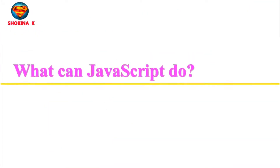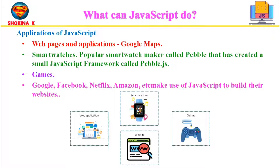JavaScript is mainly known for creating beautiful web pages and applications. An example is Google Maps — if you want to explore a specific map, all you have to do is click and drag with the mouse. Can you guess what kind of language could do that? Yes, it is JavaScript.